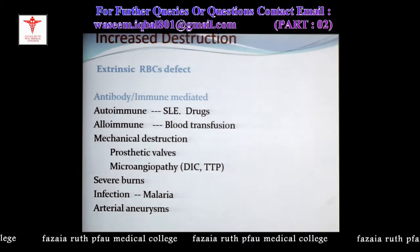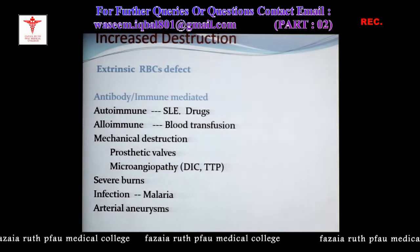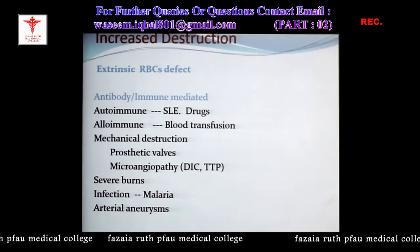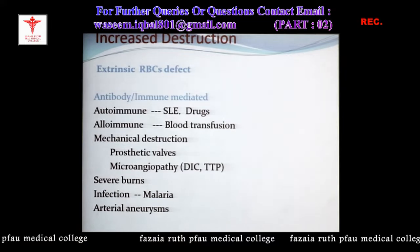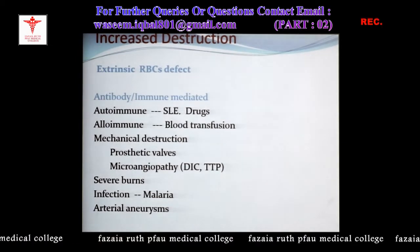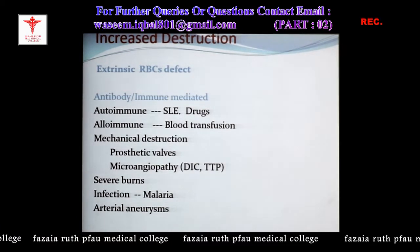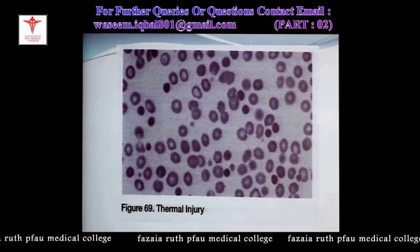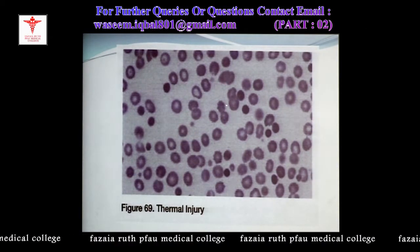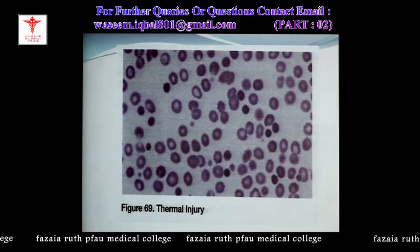Severe burns — excessive heat over the skin damages the underlying blood vessels and destroys circulating RBCs. Infections like malaria: the malarial parasite can cause intravascular or extravascular hemolysis within the spleen. Arterial aneurysm — dilation of a part of a blood vessel — causes turbulence which may lead to hemolysis. Thermal injury causes small crenations visible in the RBC membrane, and these damaged cells are then destroyed in the spleen.